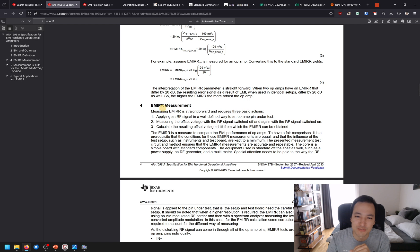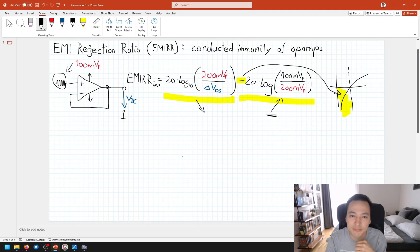The whole test procedure is straightforward. First we are applying an RF signal to one of the pins of our op amp. Then we are performing two measurements, one with RF signal, one without RF signal, to calculate the difference out of the two to obtain the offset voltage, the DC shift at our output, that we need to calculate our EMI rejection ratio. In case we are applying a different test voltage than the 100 millivolt peak, then we can add this correction factor to refer back to the 100 millivolts.